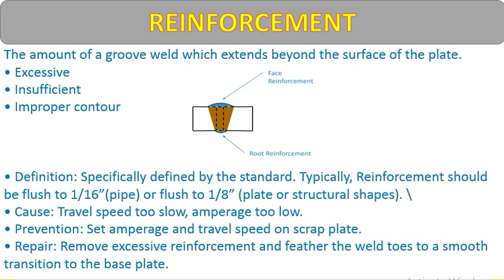Causes of excessive reinforcement: travel speed too slow or amperes too low — both result in high reinforcement buildup. Prevention: set correct amperage and travel speed on scrap plate first. Repair: remove excessive reinforcement and feather the weld toes with a smooth transition into the base plate.